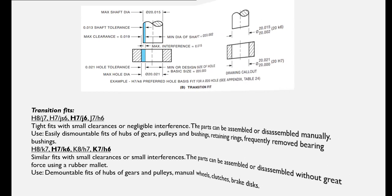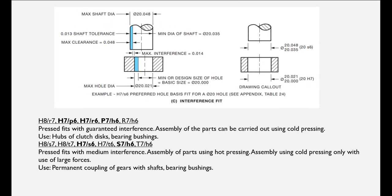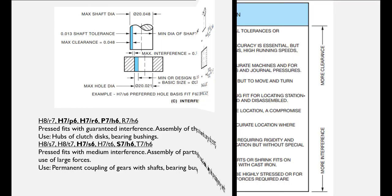An interference fit always ensures some interference between the hole and shaft in the coupling. The upper limit size of the hole is smaller than or at least equal to the lower limit size of the shaft.